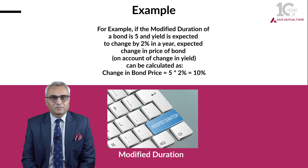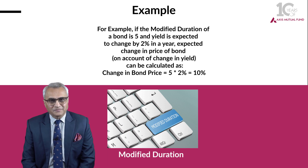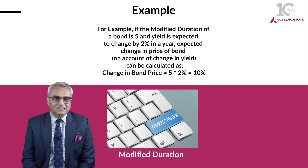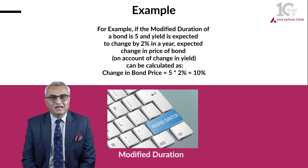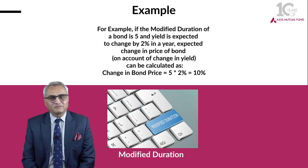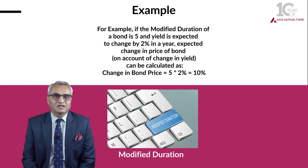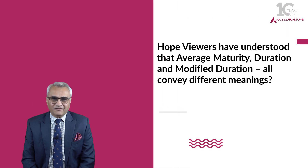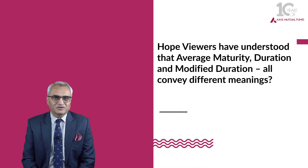the change in the price of the bond will be 5 times 2, which is equal to 10%. If interest rates are likely to go up, there will be a negative implication. If interest rates are likely to go down, there will be a positive implication of 10% on the price of the bond. I hope investors have understood the difference between average maturity, duration, and modified duration.